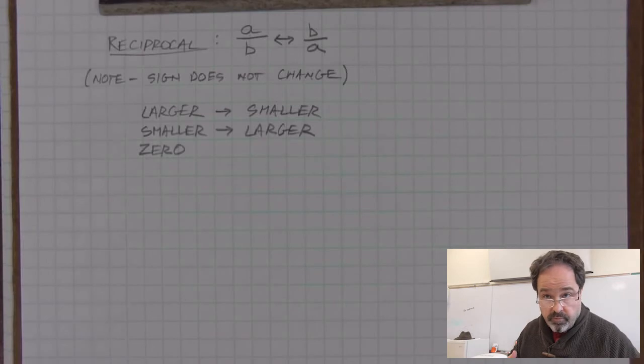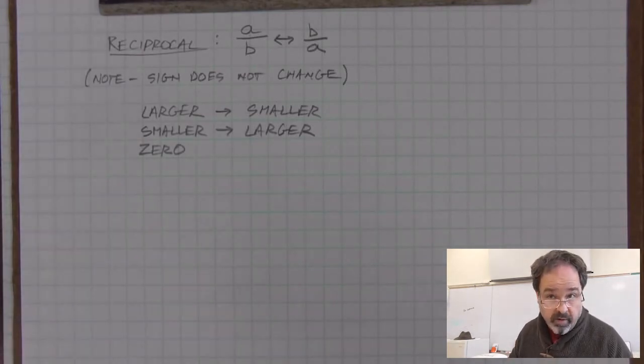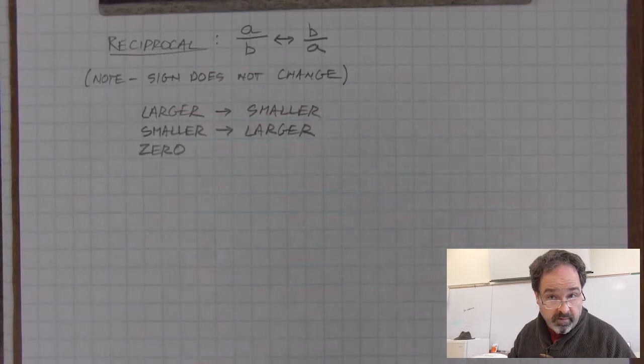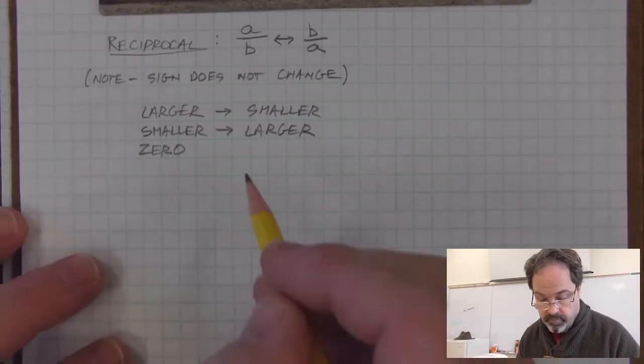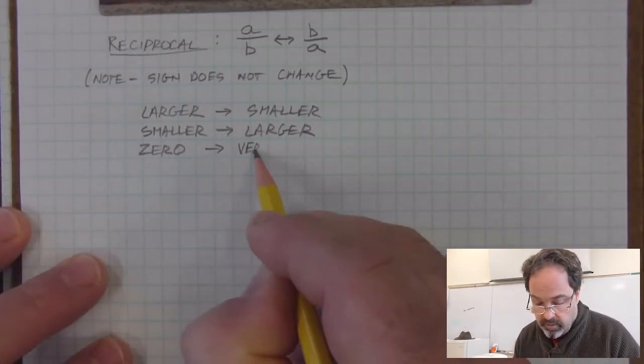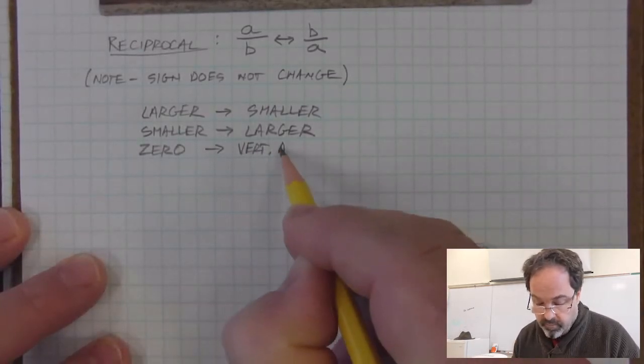And if you were going to take reciprocals of function values on a graph, that would mean that every time there was an x-intercept, a value of zero, then it's going to become a vertical asymptote in the graph. So zeros become vertical asymptotes on a graph.